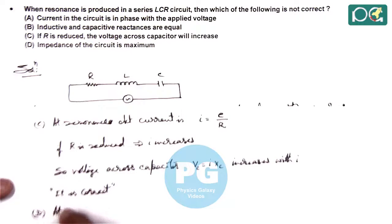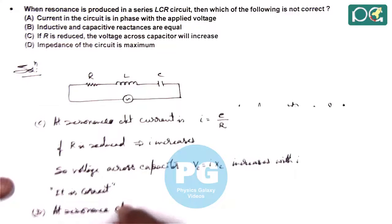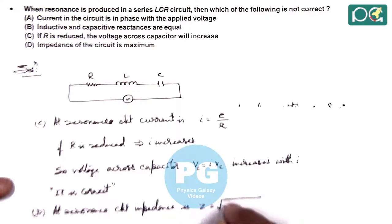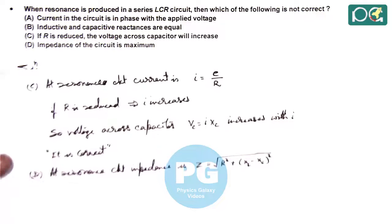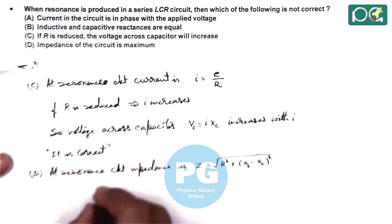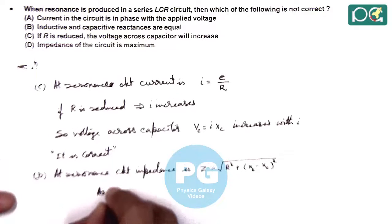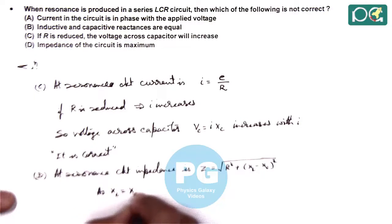At resonance, circuit impedance for a series LCR circuit, Z is given as root of R square plus XL minus XC whole square. So in this situation here we can state in this case as XL is equal to XC, this implies Z is minimum.